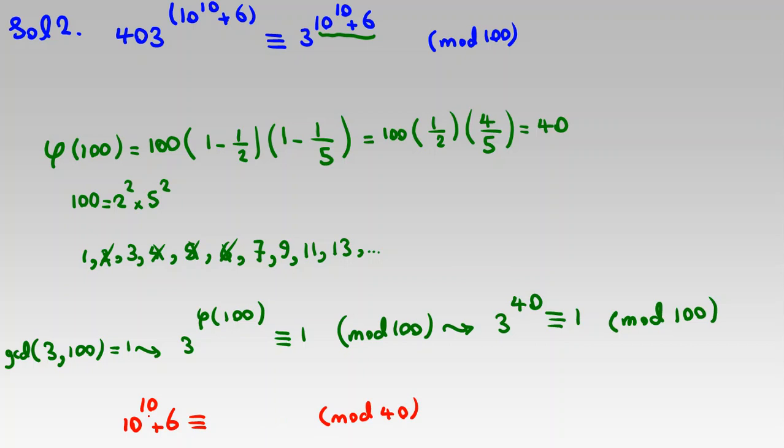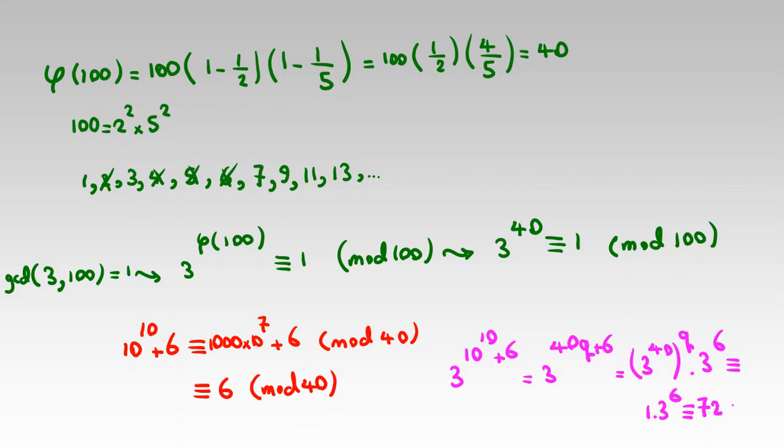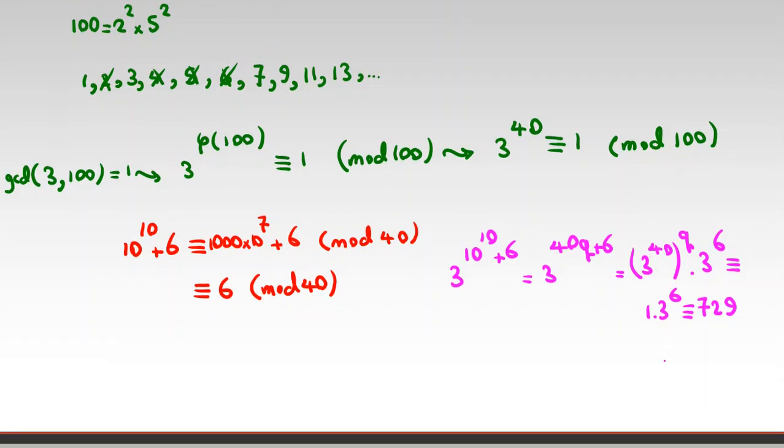I should calculate this. So 10 to the 10 is 10 times 10 times 10, many numbers. Remember, it's 1000 times 10 to the 7 plus 6. 1000 is a multiple of 40. So I can say this is equal to 6 mod 40. So I can say 3 to the 10 to the 10 plus 6 is 3 to the 40Q plus 6. And it is equal to 3 to the 40Q times 3 to the 6. If we consider this number mod 100, it is 1 times 3 to the 6, which is 729. And 729 mod 100 equal to 29. And sum of those two digits will be 2 plus 9, which is 11.